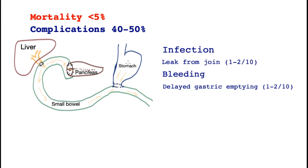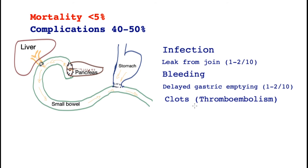Delayed gastric emptying means that patients may find their stomachs are not working as well as expected after the operation. Patients feel full after a meal and tend to vomit a lot. If this persists beyond the first few weeks, it is called delayed gastric emptying. It resolves invariably but may require nutrition supplied through a different route. Surgeons are wary of this condition because it may indicate an intra-abdominal infection or an undetected leak.